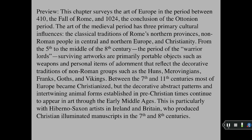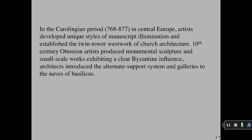This is particularly evident with Hiberno-Saxon artists in Ireland and Britain, who produced Christian illuminated manuscripts in the 7th and 8th centuries. In the Carolingian period in Central Europe, artists developed unique styles of manuscript illumination and established the twin tower westwork of church architecture. 10th century Ottonian artists produced monumental sculpture and small-scale works exhibiting a clear Byzantine influence, and architects introduced the alternate support system and galleries to the naves of basilicas.